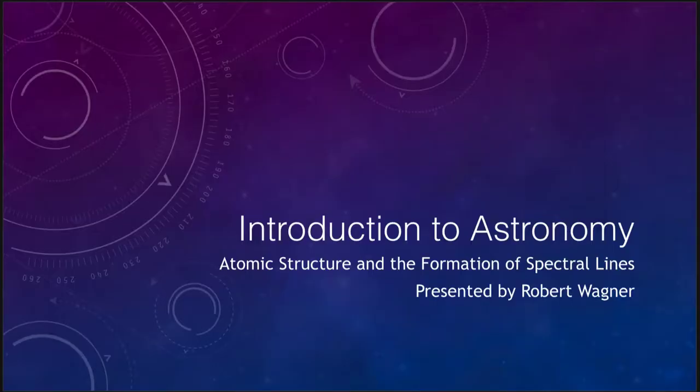Greetings and welcome to the introduction to astronomy. In this video we are going to discuss a couple of things. Overall we're going to look first at the atomic structure and how the atom is structured, and how that applies to the formation of spectral lines, so that we can see how those spectral lines are formed. Those are important because they help us determine what things are made up of in the universe.